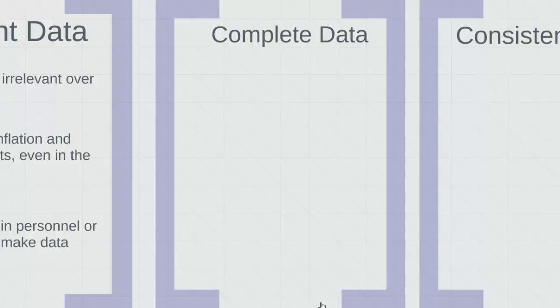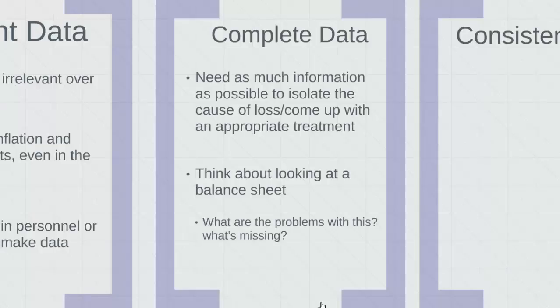Data must also be complete. You need as much information as possible to isolate the cause of losses and come up with an appropriate treatment method. The more complete your data, the more appropriate your risk treatment decisions. Think about looking at only a balance sheet to come up with the values of your property. First of all, a balance sheet doesn't specify where your property is located. If the business has more than one location, this could be expected and you purchase different insurance policies on each location or have different values at each location. An overall property value is not going to be relevant. Also, the balance sheet, as we mentioned before, has book values or accounting values. And these values have been depreciated and often not inflated. So the current replacement cost or market value wouldn't be reflected in the balance sheet. You have to ask yourself, with all data, what's missing and what are the problems with this data?